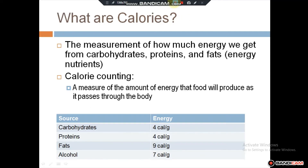Calories are the measurement of how much energy we get from carbohydrates, protein, and fats — the energy nutrients. Carbohydrates provide 4 calories per gram, protein provides 4 calories per gram, fat provides 9 calories per gram, and alcohol provides 7 calories per gram. These grams multiplied by your intake determine the energy available for proper growth and maintaining good health.